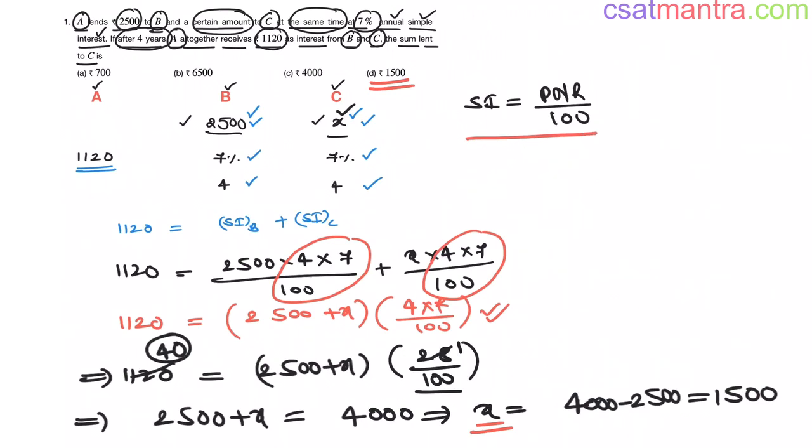Now, what I did? I have assumed the things which are not known. Sum lent to C is not known, so I have assumed it as X. Now, I have gone step by step. Divide and rule. I have identified what are all the information given and put them in this equation. Total interest obtained is equal to interest obtained on amount given to B plus interest obtained on amount given to C. From this, I found out the value of X.